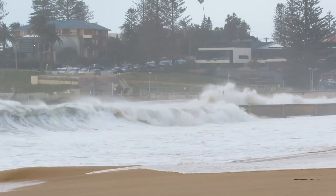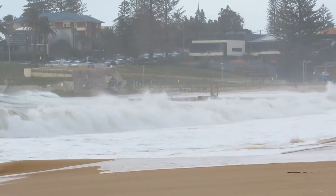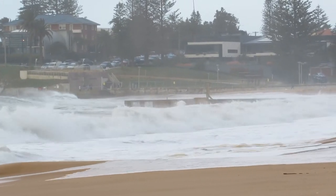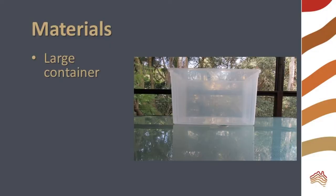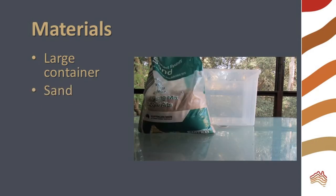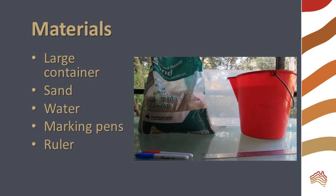In this experiment, we will model coastal erosion and look at the effect of sea level rise on the coast. You will need a large container, sand, water, two colored marking pens, a ruler, and a board or a plastic bottle to use when making waves.